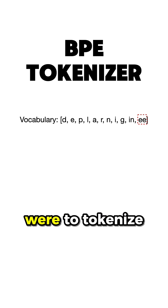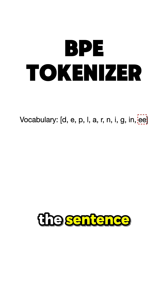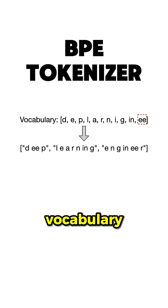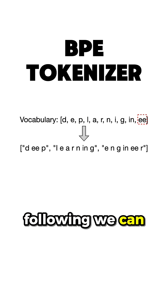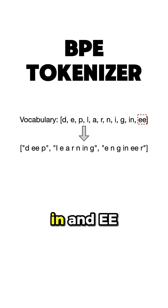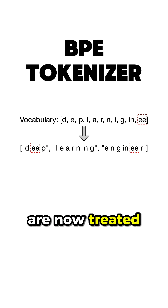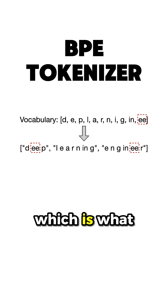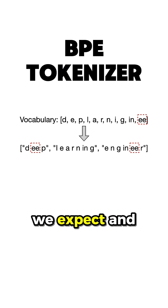Now, if we were to tokenize the sentence with the updated vocabulary, we obtain the following. We can see that both IN and EE are now treated as separate tokens, which is what we expect.